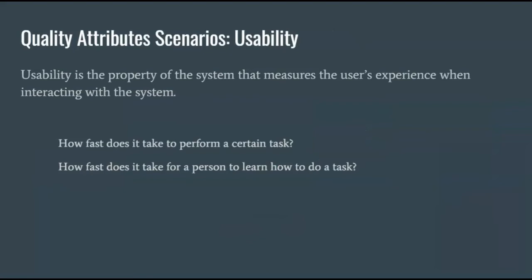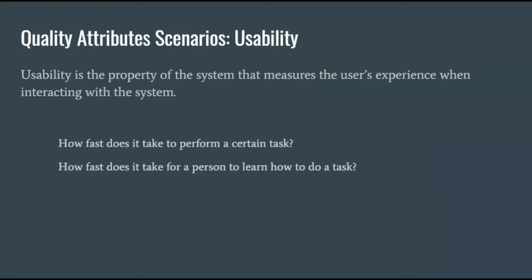Usability is a measure of the user's experience when using the system. In order to be objective, we should try to measure how fast — like how many clicks or button presses does it take to perform a task, or how fast does it take for someone to learn how to do something. An example: if a pilot decides to learn how to fly the Green Lion under normal operations, the pilot should be able to learn it in under two days.